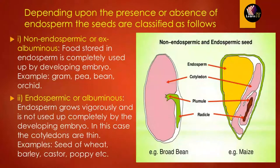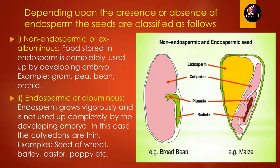Endosperm gives nutrition to the seeds of the plant. Based on whether endosperm is present or absent, seeds are classified into two categories: non-endospermic, also known as ex-albuminous, and endospermic, also known as albuminous. In non-endospermic seeds, the food stored in the endosperm is completely used up by the developing embryo at the time of development.